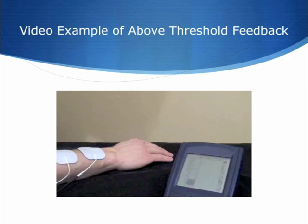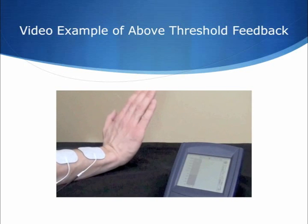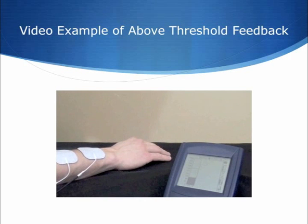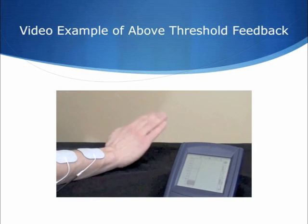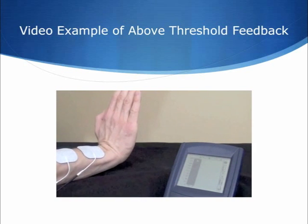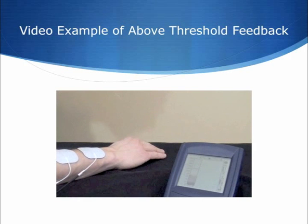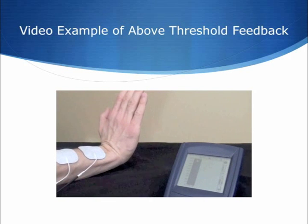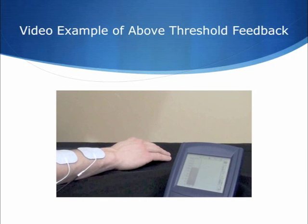When he exceeds the threshold, he'll be rewarded with an auditory sound. As he relaxes and goes below the threshold, the auditory feedback will stop. As you can see, when he extends his wrist and finger extensors and goes above the threshold, he receives the auditory sound. And then when he falls below the threshold, the feedback no longer occurs.